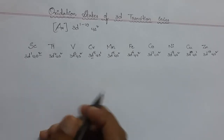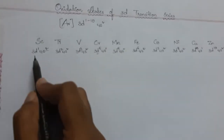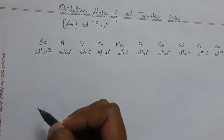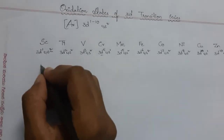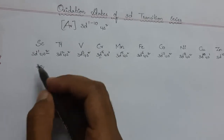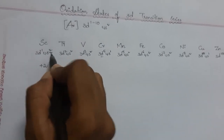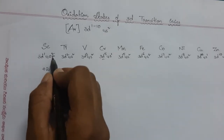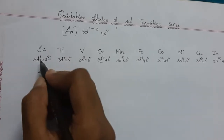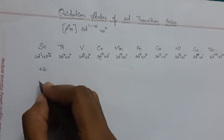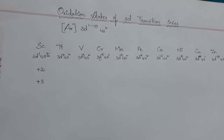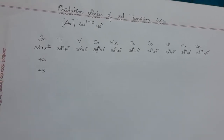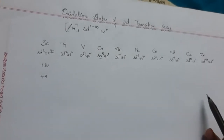When we observe scandium's electronic configuration, the fourth shell s orbital contains two electrons. When those two electrons are lost, it acquires an oxidation state of +2. When it additionally loses the one electron in the d orbital, it acquires an oxidation state of +3. Like this, all these elements get their oxidation states, and +2 and +3 are common in all the elements except zinc.